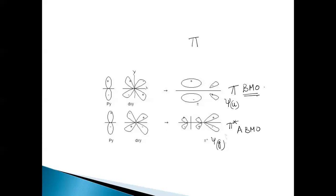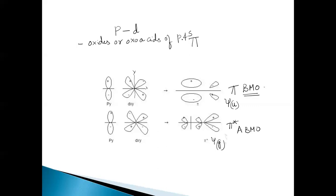The bonding molecular orbital is lower in energy compared to either of the two atomic orbitals. The antibonding molecular orbital is higher in energy. This PD combination is observed in the formation of oxides and oxo acids of phosphorus and sulfur, and also in transition metal complexes.